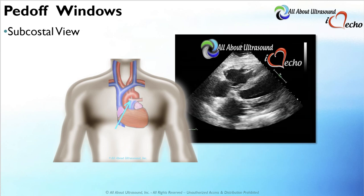Another window that's useful to evaluate with the PEDOF transducer is the subcostal view. A lot of sonographers forget about this one, but it can be helpful, especially with a patient that might have a very low-placed heart. The best position for this is to have the patient lying in a supine position with their legs bent at the knee. That bend of the legs will help to reduce the pressure from the abdominal muscles and allows for better access to the heart. This positioning is also helpful for your standard 2D imaging of the subcostal view.